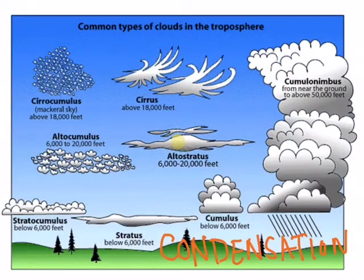When water goes through the process of condensation, it cools and leaves the air in the form of tiny water droplets that create clouds. There are many different types of clouds, which you have probably noticed if you have ever looked up in the sky. One that we see a lot is cumulus. These are the puffy white cotton ball clouds. They're pretty low lying to Earth and they don't produce any precipitation.